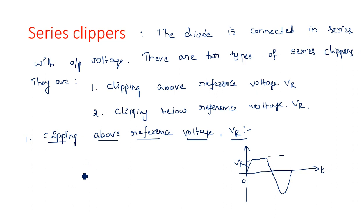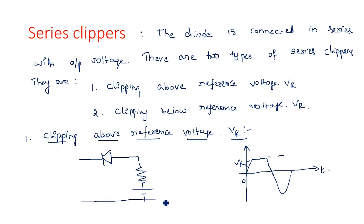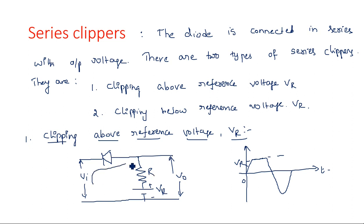The circuit diagram has a diode connected in series with the output voltage, and across the output voltage we have a resistor followed by a reference voltage VR. This is V0. The diode here is connected in series with the output voltage. In the previous shunt type clipper, the diode was in place of the resistor, connected in parallel with VR. That is why the previous one was called a shunt type clipper, but this one is a series type clipper.